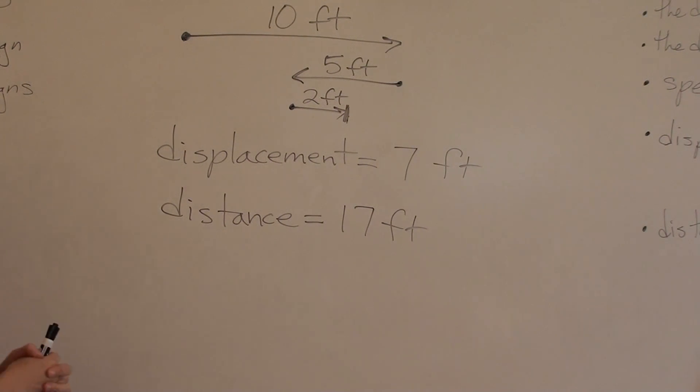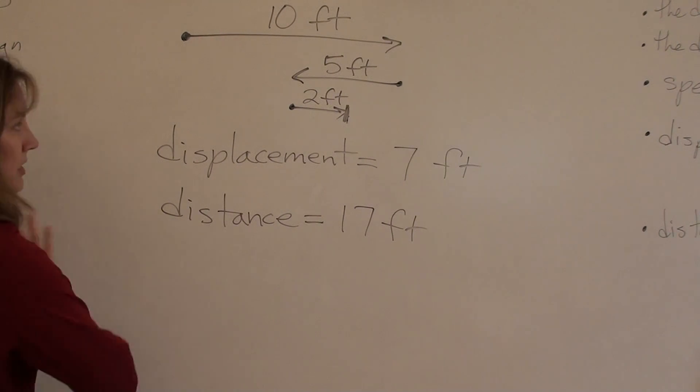My distance, that's the total that I walked, right? The total that I walked would be 17 feet. Say I completed a mile lap that was just in a great big circle, and I'm back where I started. What would my displacement be? Zero. But my distance would be one mile, right?